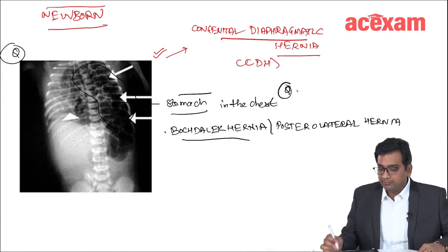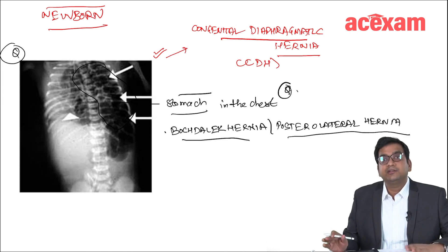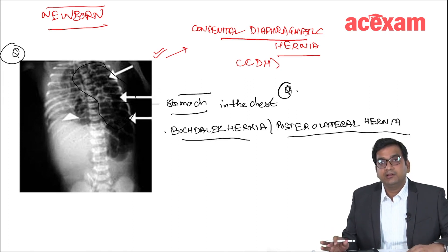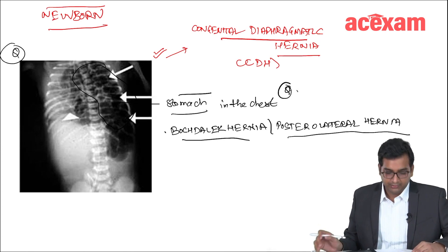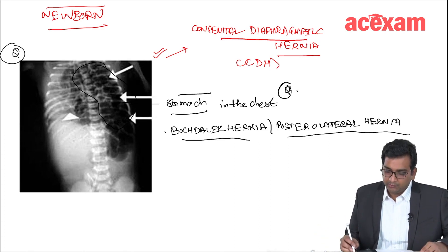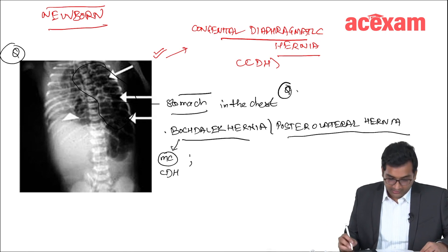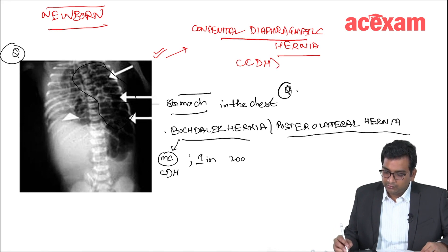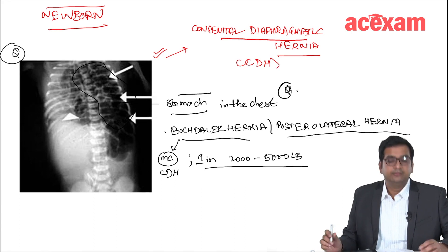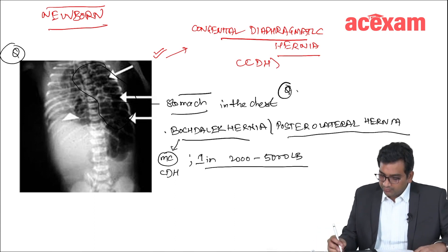This is a very important topic. Every year, people are asking questions on this topic. It is asked in paediatrics and in surgery also. This Bochdalek hernia is the most common type of congenital diaphragmatic hernia, and the incidence is one in 2000 to 5000 live births.